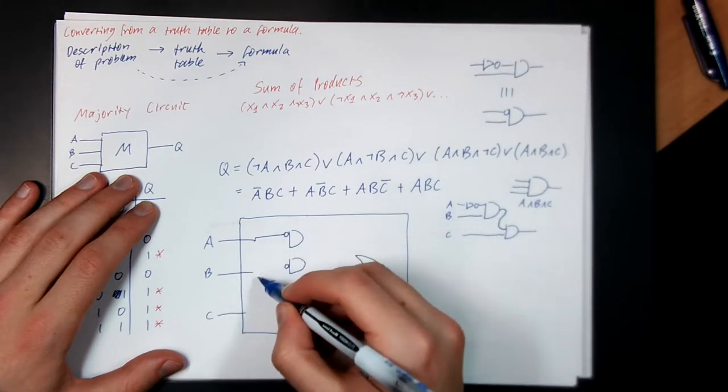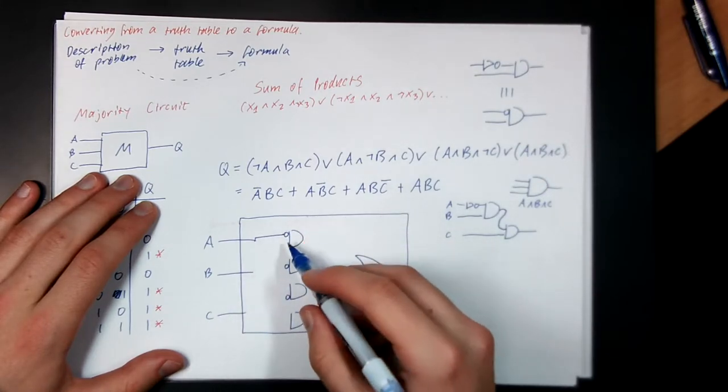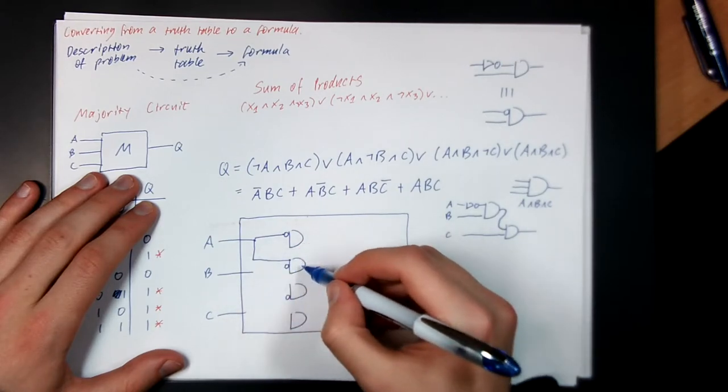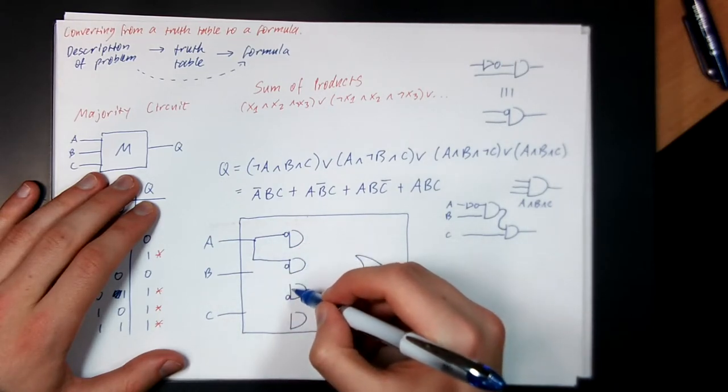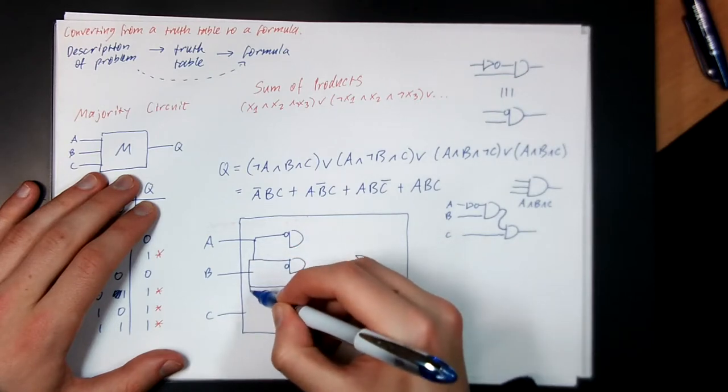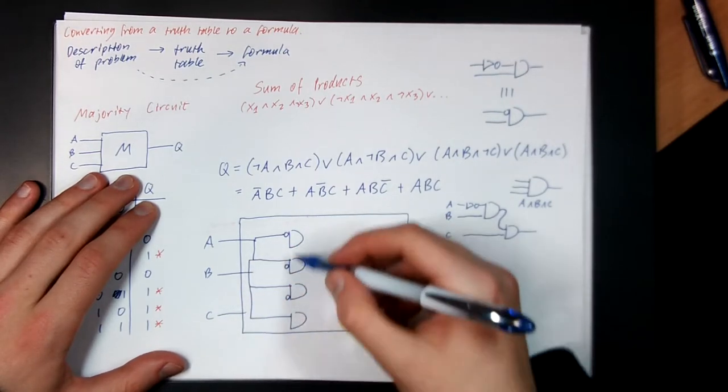So A goes to all of them. But we'll make A the first input. So A goes here. A goes here. A goes here. And there we go. That's all A inputs.